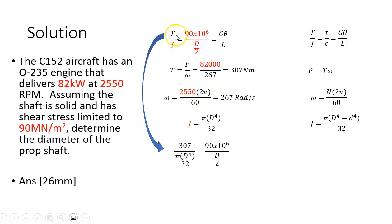I'm going to take this part of the equation and bring it down. And I'm going to substitute in our values. Our torque T, we calculated that to be 307. J is just pi d to the power of 4 all over 32.